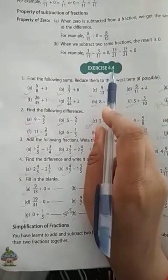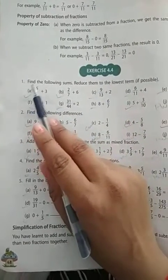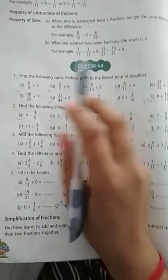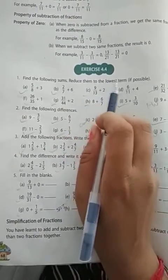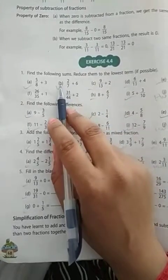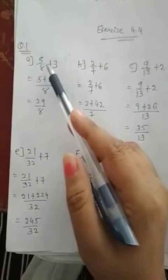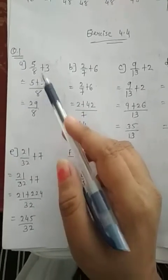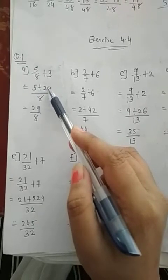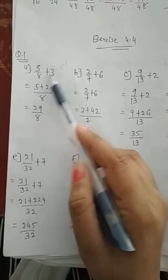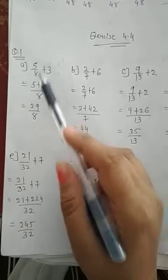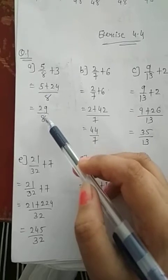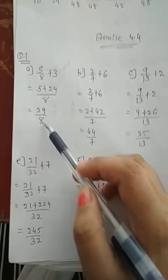Exercise 4.4. First question: find the following sums, reduce them to the lowest form if possible. First, 5 by 8 plus 3. We do 8 times 3, which is 24, whole divided by 8. So 24 plus 5, 29 divided by 8. Our answer is 29 by 8.